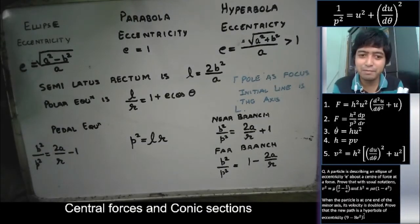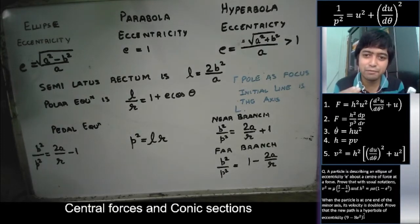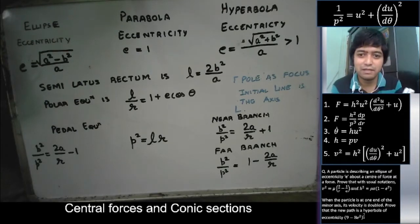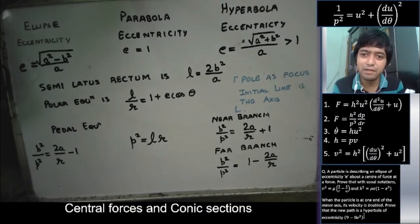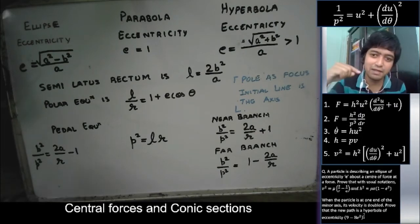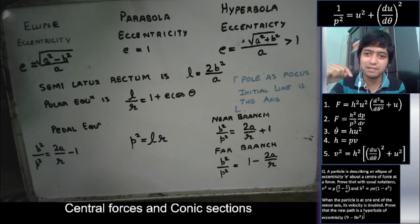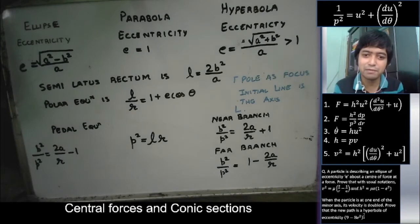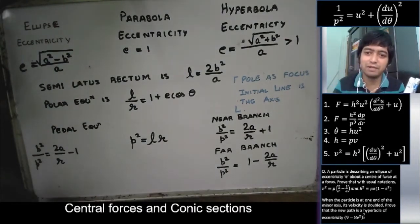Hello, today we are going to learn about central forces and conic sections. We had seen about central forces and the various formulas involved. We had also learned about apsides and apsidal distances. But if you look at nature, particularly astronomy, where you have planets revolving around the sun, most of the orbits under central forces are conic sections. So we will see the link between central forces and conic sections through a question.